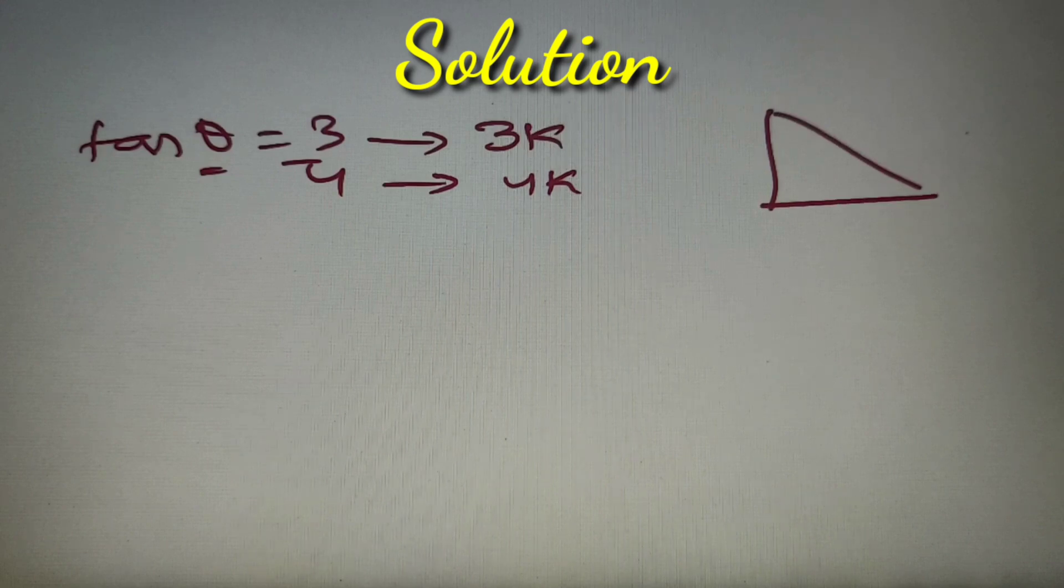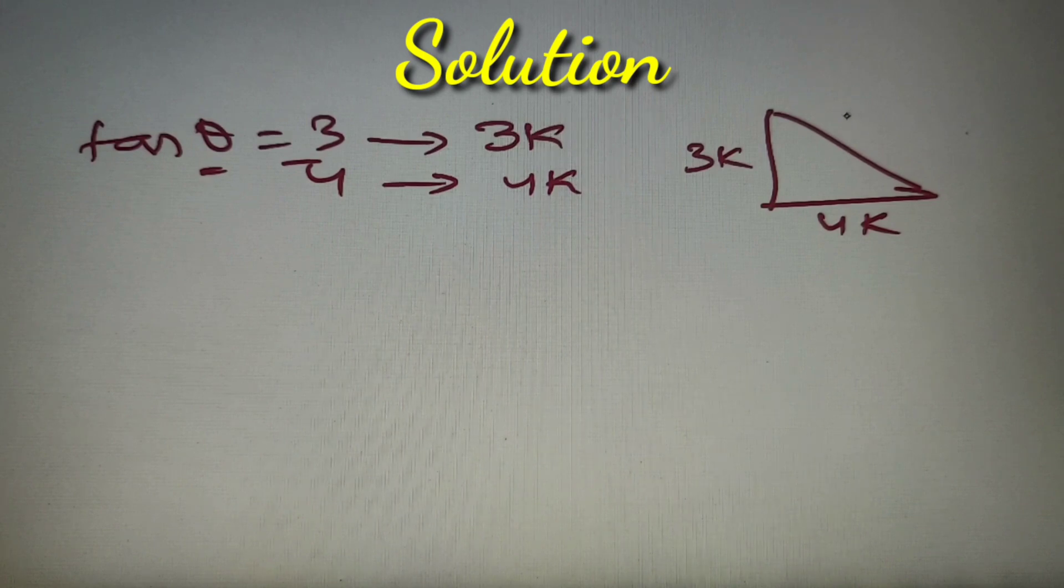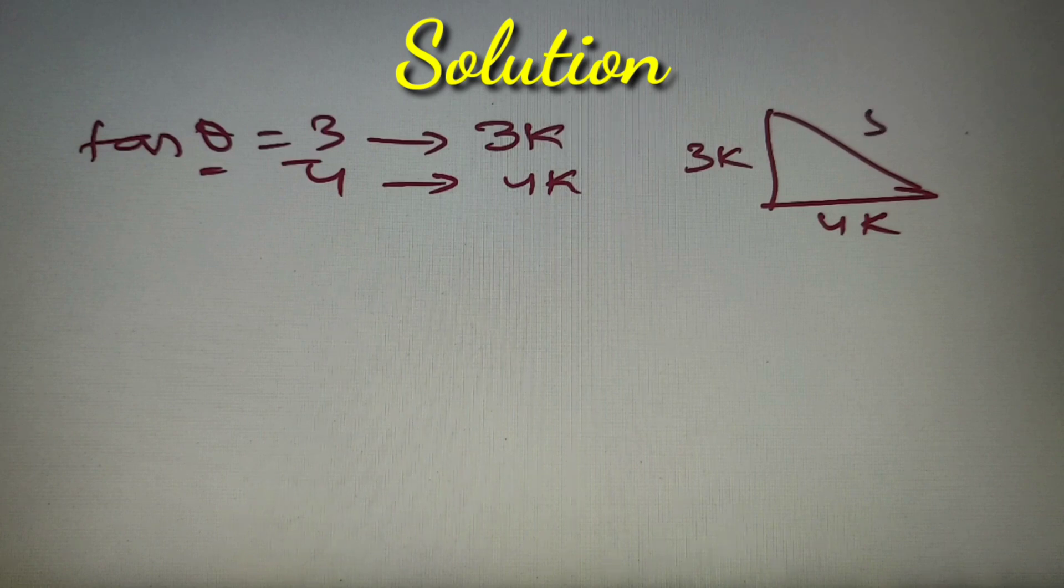We can construct a right angle triangle with perpendicular of value 3k and base of 4k, and hypotenuse equal to under root of 3 square k square plus 4 square k square, that is equal to 5k. So we have got all the three sides.